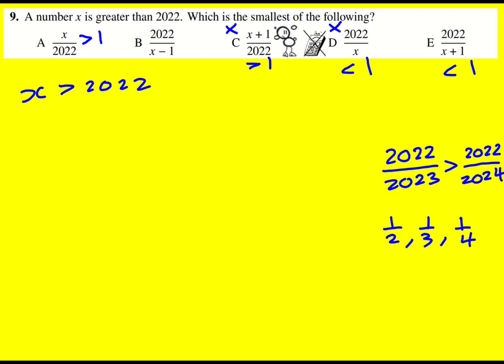So that actually links into here because if x is 2023, then this thing would actually be 1. But what I'm trying to convince you of is that B,